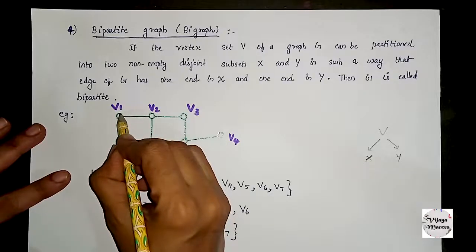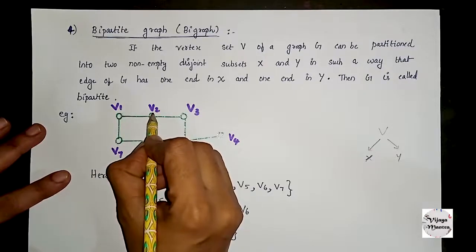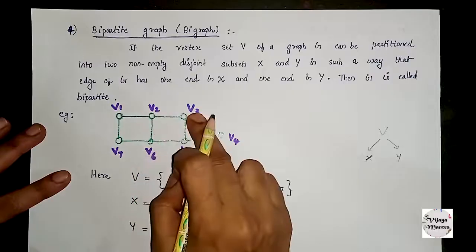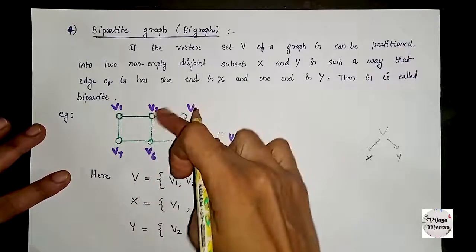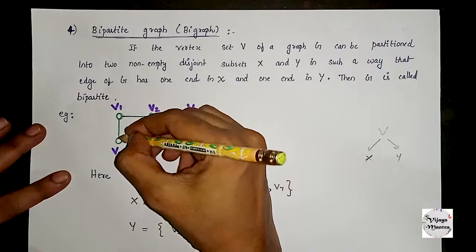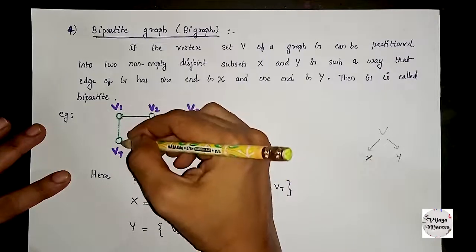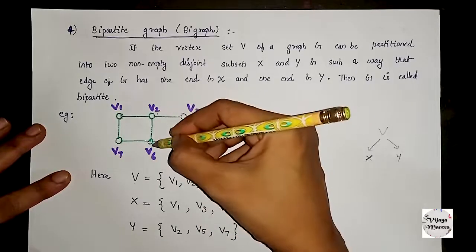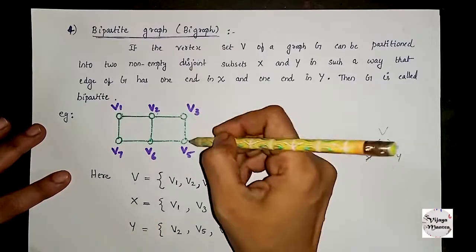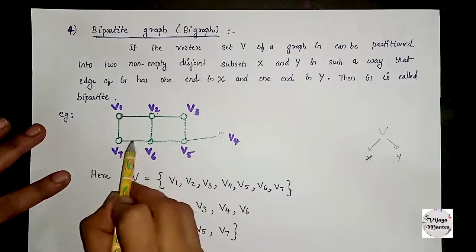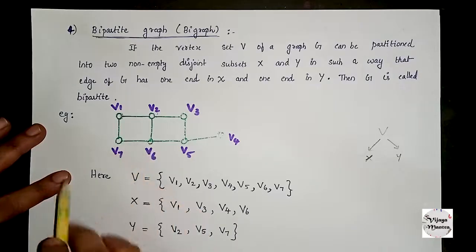We assign: V1 goes to X, V2 goes to Y, V3 goes to X, V7 goes to Y, V6 goes to X, V5 goes to Y. X and Y are two disjoint subsets such that any edge has one end in X and one end in Y.